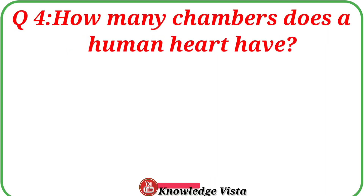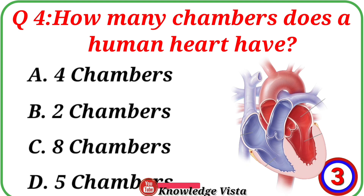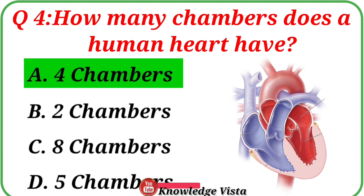Question No. 4. How many chambers does a human heart have? Your options are: A. Four chambers, B. Two chambers, C. Eight chambers, D. Five chambers. Correct answer is option A: Four chambers.